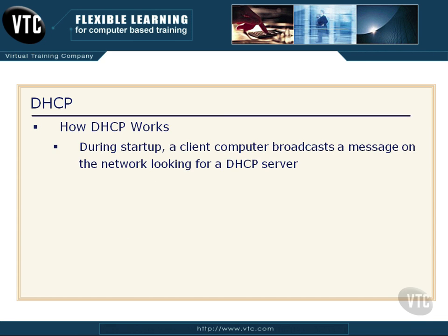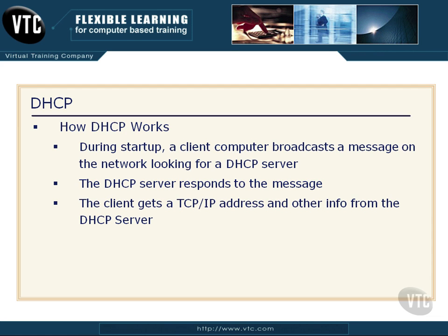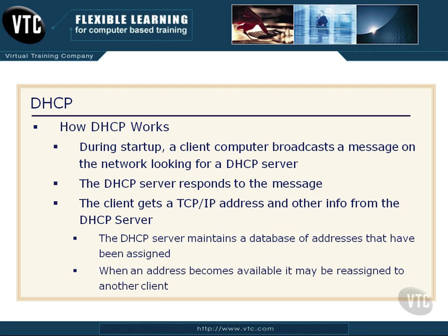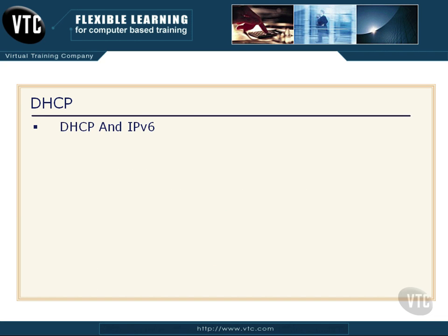How does DHCP work? When we start up a client computer, it broadcasts a message on the network saying it needs a DHCP server — someone to provide the correct IP configuration so it can communicate on the network. The DHCP server receives that and responds, and there's a handshake and back and forth. Eventually the client gets a TCP/IP address and other information from the DHCP server. The DHCP server automatically maintains a database of addresses that have been assigned, and when an address becomes available, it takes it back, puts it back into the pool, and may reassign it to another client. So DHCP not only takes care of addressing clients, but it also maintains the list of addresses and doesn't waste them — it will reuse or recycle them.